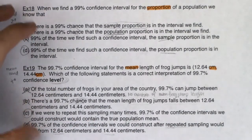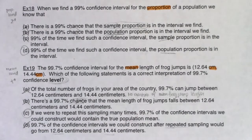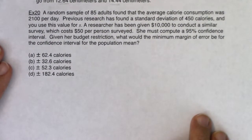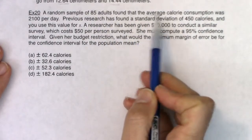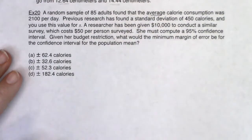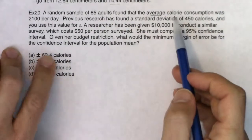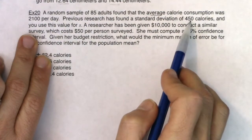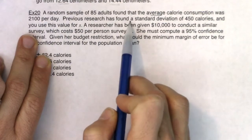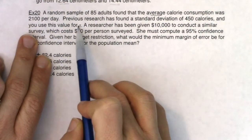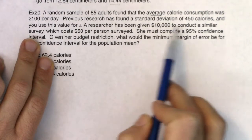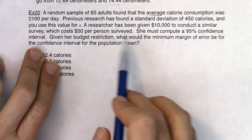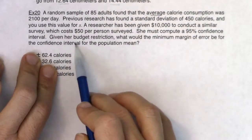Those are two multiple choice questions focused on interpreting the confidence level. Now let's take a look at Example 20 to round out this chapter. A random sample of adults found that the average calorie consumption was 2,100 per day. Previous research found a standard deviation of 450 calories — use this value for S. A researcher has been given $10,000 to conduct a similar survey costing $50 per person and must compute a 95% confidence interval. Given her budget restriction, what is the minimum margin of error for the confidence interval of the population mean?